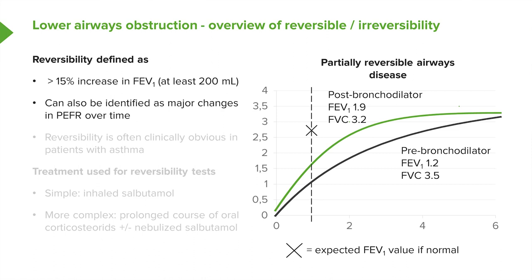This is shown by the diagram on the right-hand side of this slide. The patient's pre-treatment, pre-bronchodilator data gives an FEV1 of 1.2. Then the patient is given some salbutamol, and the FEV1 increases by 700 mLs — by over 50% — to 1.9. So that's a substantial degree of reversibility. However, because of the age, sex, and height of this patient, the FEV1 is expected to be closer to 3, about 2.7 to 2.8. And yet they've only achieved 1.9 after bronchodilation — so that's a partially reversed situation.